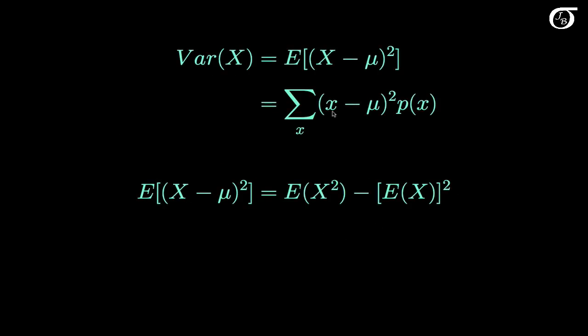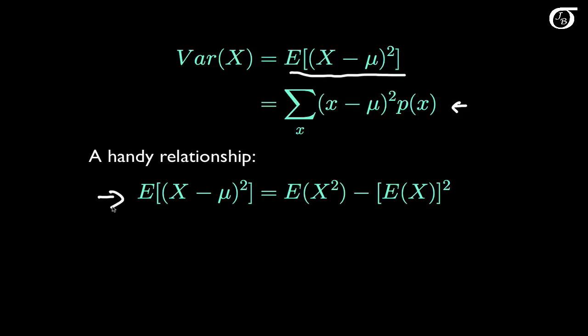The variance of a random variable x is defined to be the expectation of (x minus mu) squared. For a discrete random variable that's going to be the sum over all possible values of x, of (x minus mu) squared times p(x). We could work out the variance using this formula, but it's often easier to rely on this handy relationship: the variance of x is equal to the expectation of the square of x, minus the square of the expectation. We've already worked out the expectation of x to be p, so now we simply need the expectation of x squared.